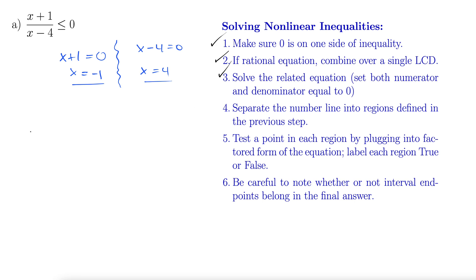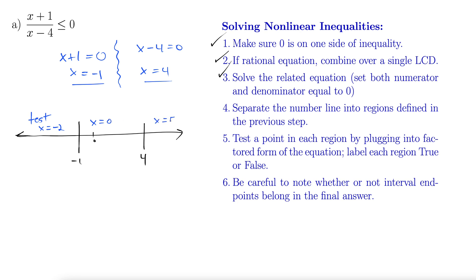Next, we separate the number line into regions and select some test points. We place zero as a marker, then mark negative one and four. We pick test points the same way as in the polynomial case: x equals negative two, x equals zero, and x equals five.